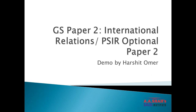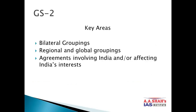Today I am going to discuss International Relations and Political Science, covering IR Optional Paper 2 and GS Paper 2 International Relations. First, we will discuss the key areas of GS Paper 2 in terms of International Relations: bilateral groupings, regional and global groupings, and agreements involving India or affecting India's interest.